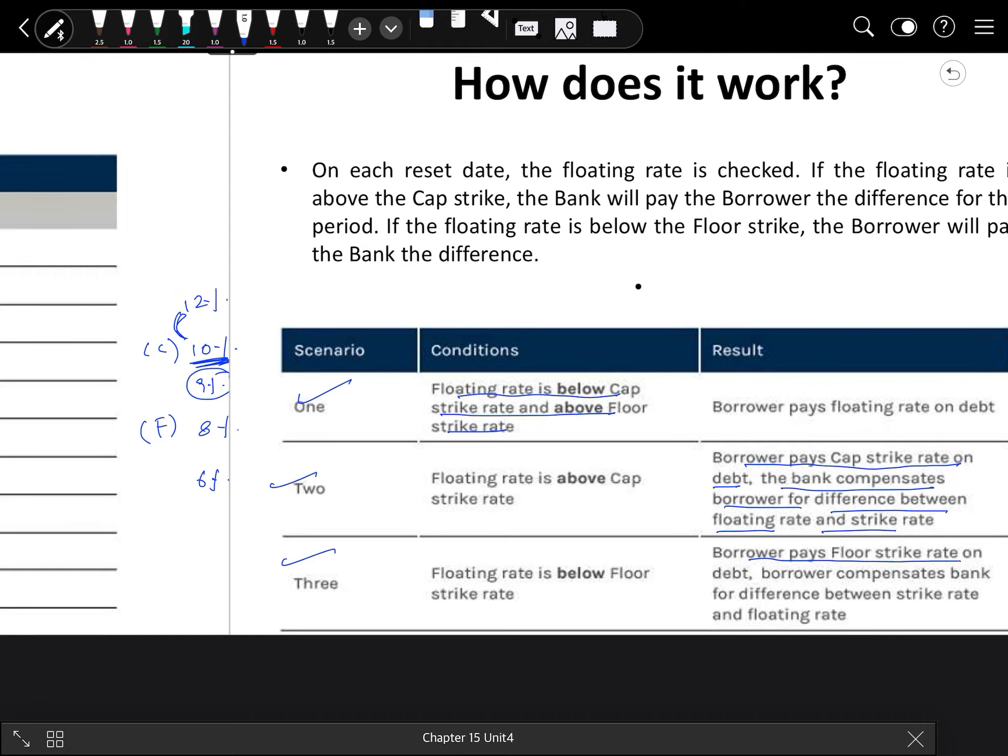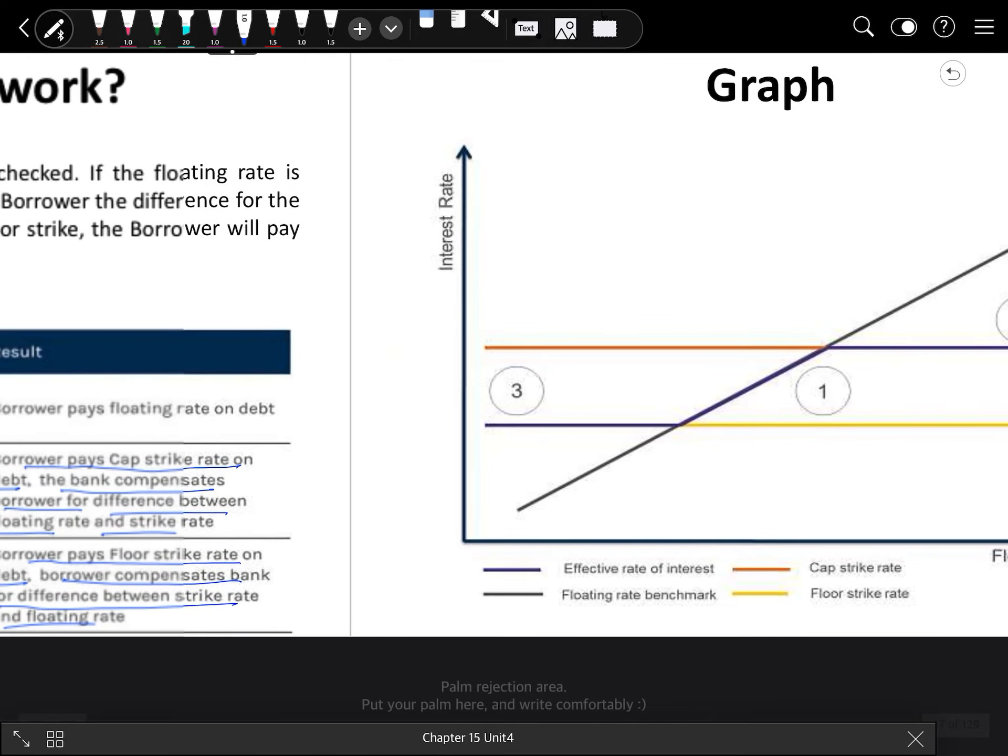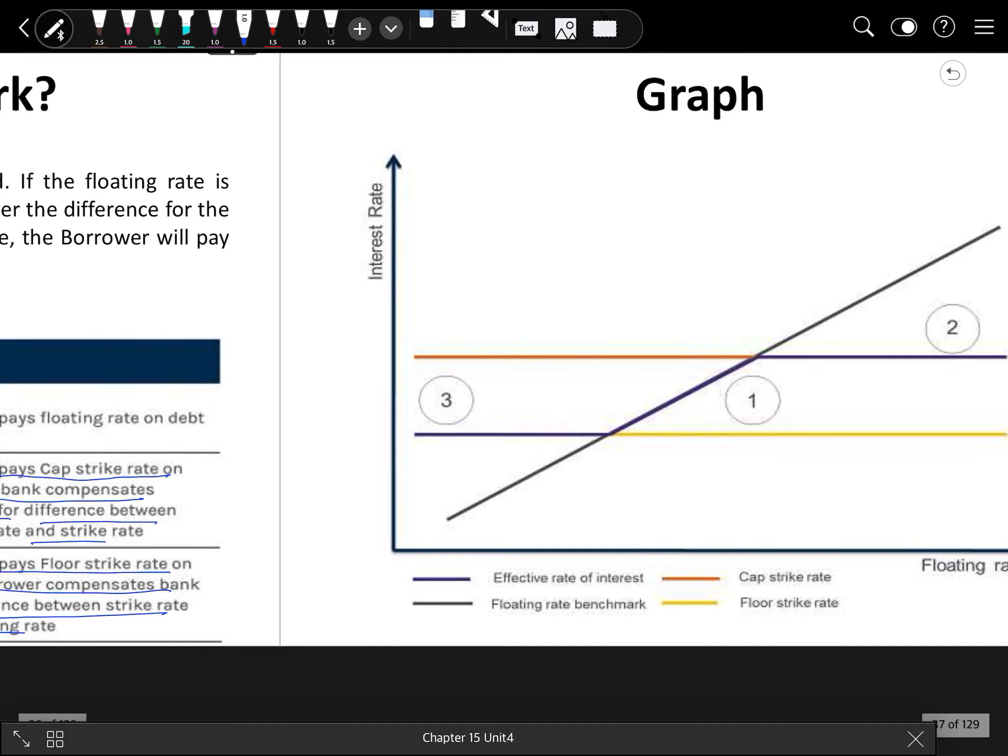The borrower will pay floor strike rate on the debt and the borrower will compensate the bank for the difference between the strike rate and the floating rate. So the borrower will pay 8% plus the 2% difference, so total payment is 10%. Actually what is happening is the borrower has fixed how much payment is paying under any type of scenario. I hope this collar situation is also clear.